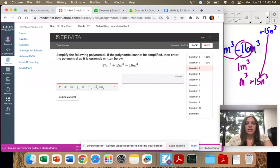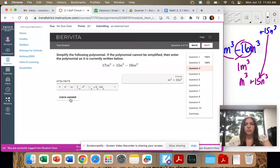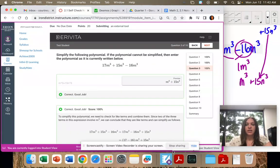So when you type it in, m to the third plus 15n to the third, my preview matches. So I'm going to check my answer and it's good.